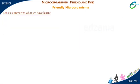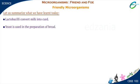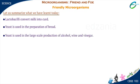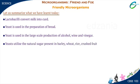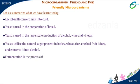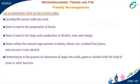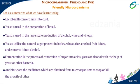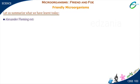Let us summarize what we have learned today. Lactobacilli convert milk into curd. Yeast is used in the preparation of bread. Yeast is also used in the large-scale production of alcohol, wine, and vinegar. Yeasts utilize the natural sugar present in barley, wheat, rice, and crushed fruit juices and convert it into alcohol. Fermentation is the process of conversion of sugar into acids, gases, or alcohol with the help of yeast or other bacteria. Antibiotics are the medicines which are obtained from microorganisms to stop or kill the growth of other disease-causing microorganisms.